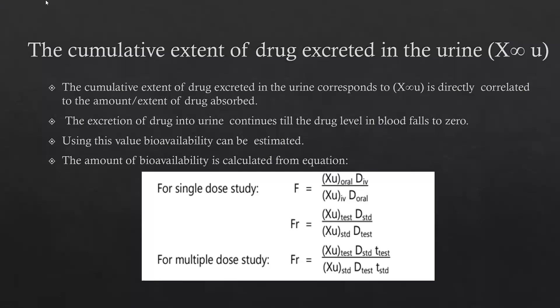These equations are used for calculating bioavailability for single-dose study or multiple-dose study. F is the absolute bioavailability, FR is the relative bioavailability, XU is the urinary excretion or maximum urinary excretion of the drug, D means the dose of the drug, and T refers to the test formulation. These are the indirect methods used for the assessment of bioavailability.